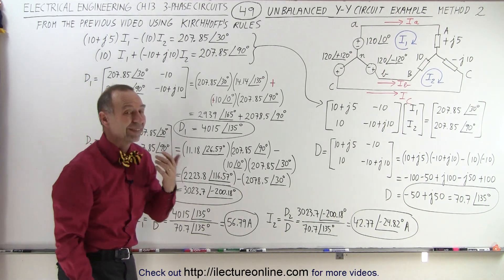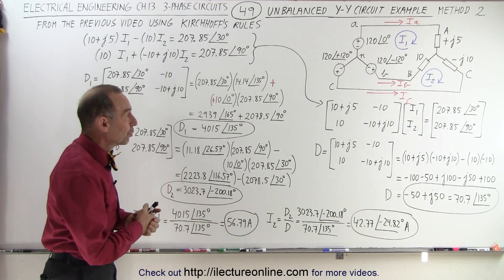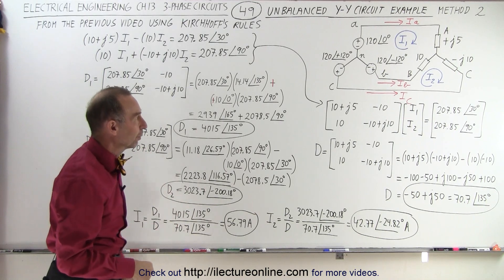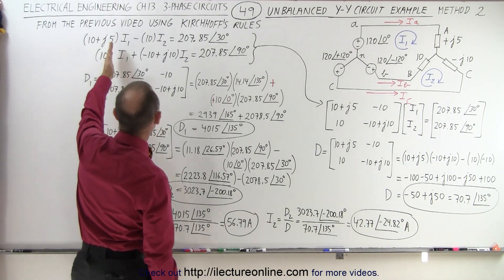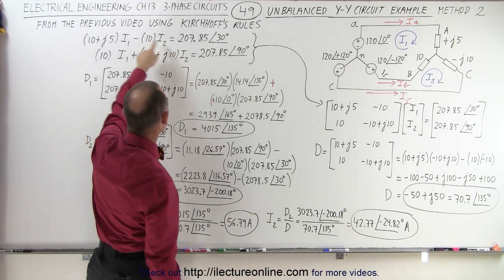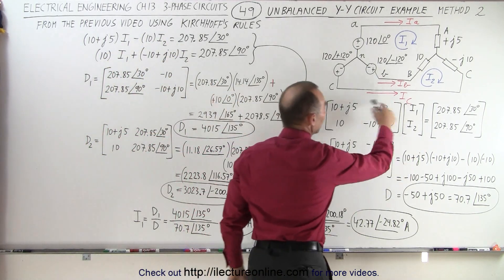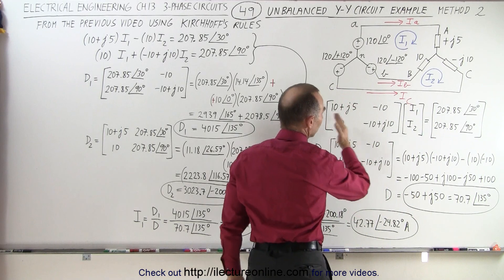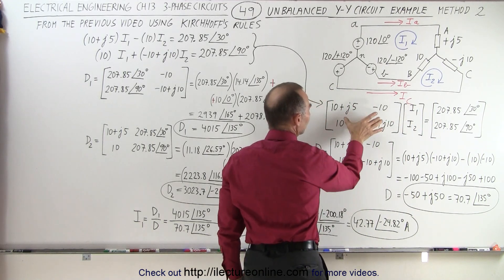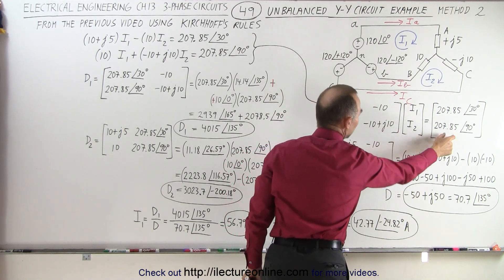Now what we're going to do instead to solve this is we're going to use the determinant method. In other words, we're going to take these two equations which have the two unknown variables I1 and I2 and we're going to solve that using this method right here. We're going to put it into the determinant method where we have this matrix times this matrix equals that matrix.